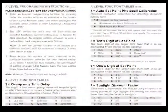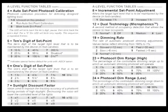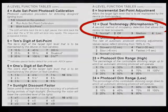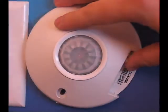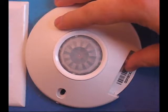To disable PDT, we will need to enter the function that houses dual technology, which is number 12. Hit the programming button 12 times, and then count the LED flashes per cycle.